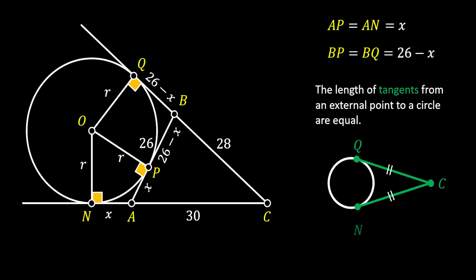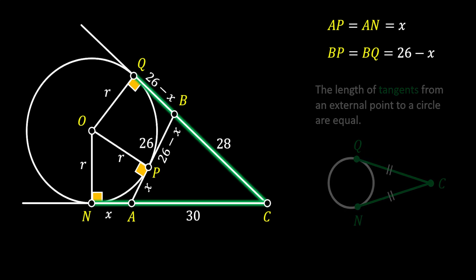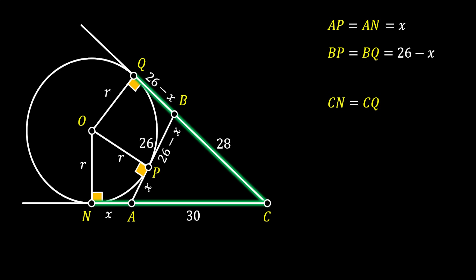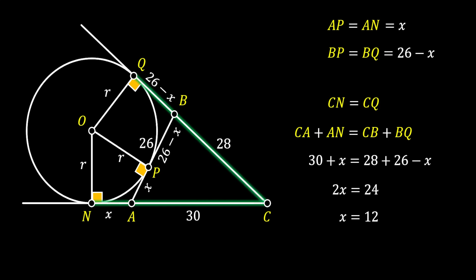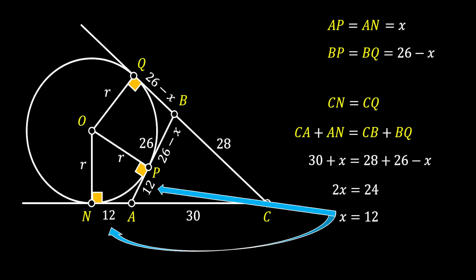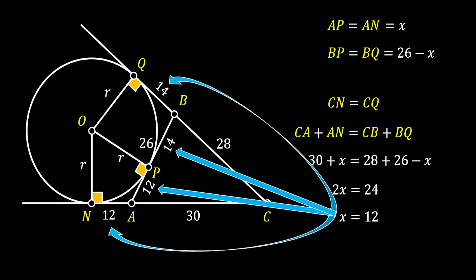Finally, let's have a look at lines CQ and CN. These two lines also represent tangents from the same external point, so lines CN and CQ are equal. From the sketch, CN equals CA plus AN and CQ equals CB plus BQ. Substituting our values, we can work through this and get that X equals 12. We can then substitute this value so that AP and NA equal 12, and PB and BQ equal 14.